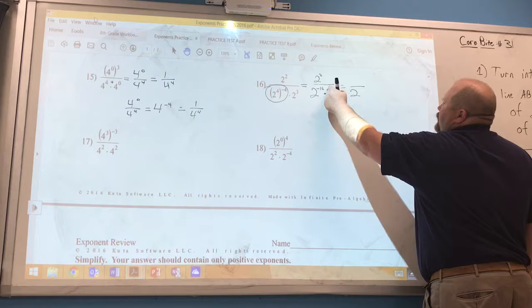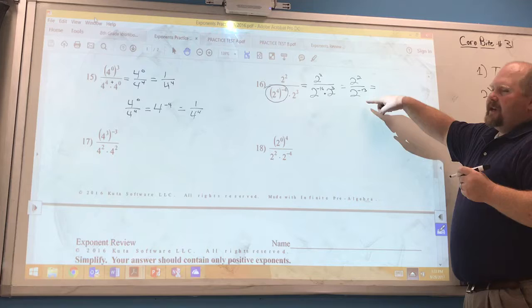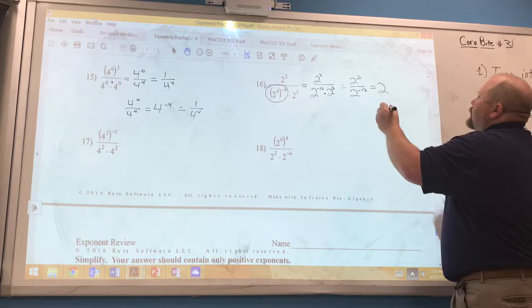In the numerator we have two to the second power. We just keep bringing that over. So at this point we have a dividing like bases problem and when you divide like bases you subtract exponents and the base stays the same. So we have a base of two and we're going to subtract two minus negative 13.